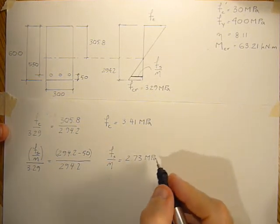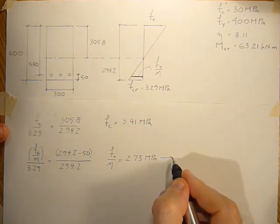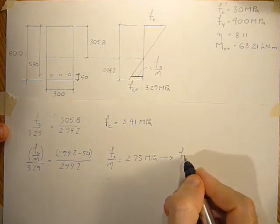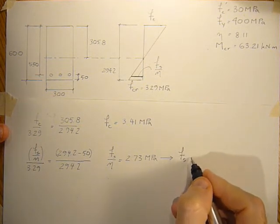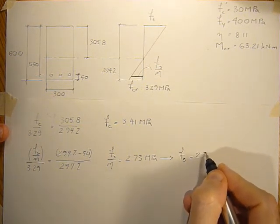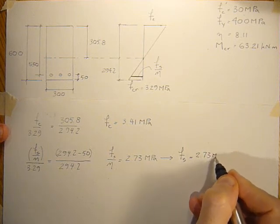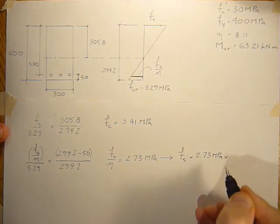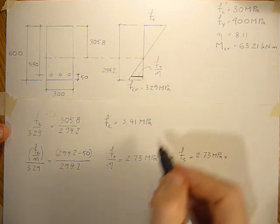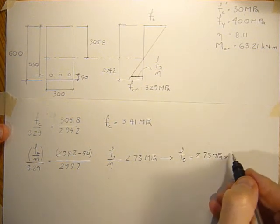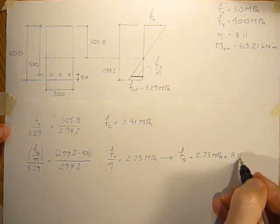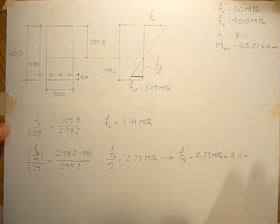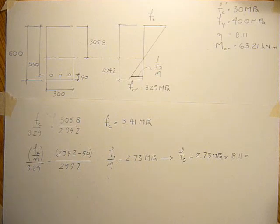But we want to know what the stress in the steel is. So the stress in the steel would be equal to 2.73 MPa times the modular ratio n, which is 8.11. So the stress in the steel is 2.73 times 8.11, which is about 22.14 MPa.